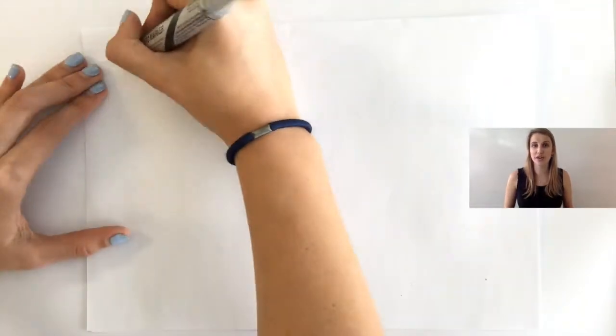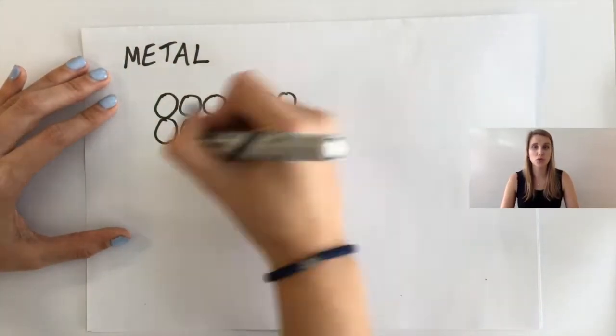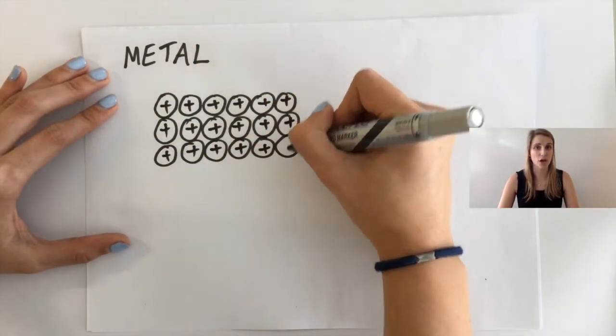Before we get started on looking at alloys, let's first of all look at what the structure of a pure metal looks like. This is a little bit of a diagram as to how it looks.